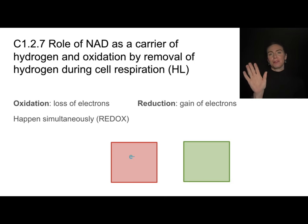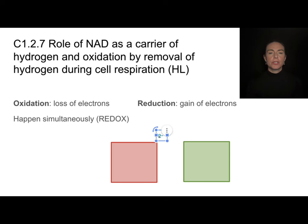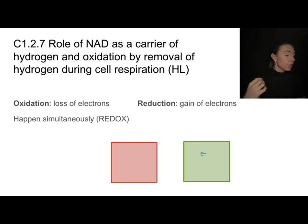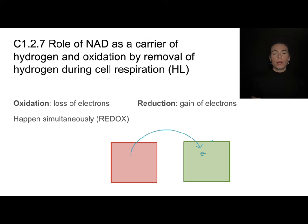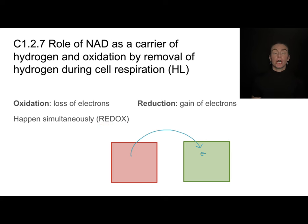In reality, electrons don't come from nowhere and they don't go to nowhere — they're passed between molecules. When a molecule loses an electron, that is called oxidation. But that electron doesn't just go into space; it is immediately gained by another molecule. The loss of electrons is oxidation and the gain of electrons is called reduction, and those two processes happen simultaneously. Anytime you have the movement of electrons from one molecule to another, something is getting oxidized and something is gaining electrons — you may have heard that referred to as redox.